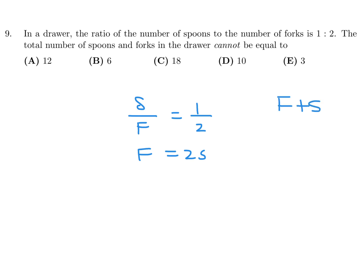And they're saying the total, which would be F plus S, cannot be equal to. Well, first let's make it all into one variable. So if F is 2S, that'd be 2S plus S, so that'd be 3S. So the total, which is F plus S, is 3S. So that basically means the total is a multiple of 3.